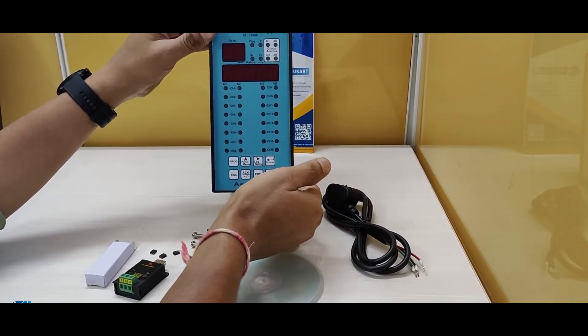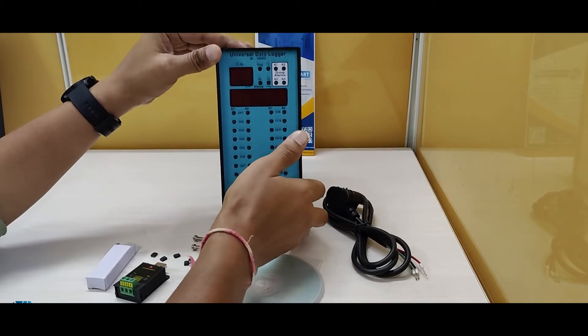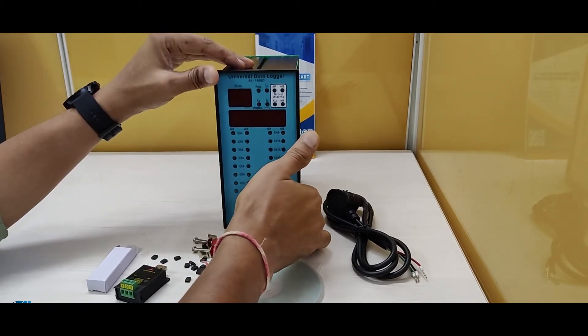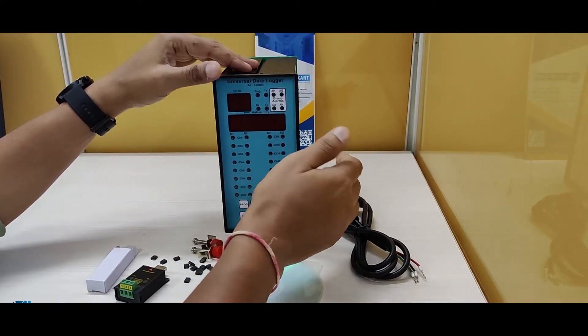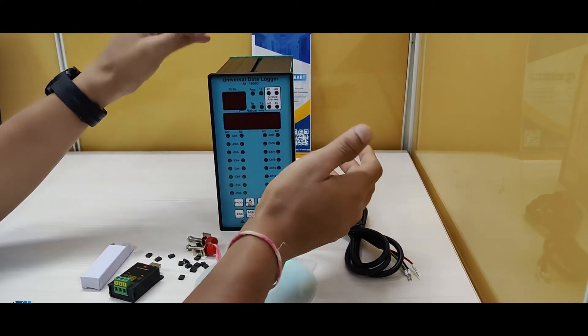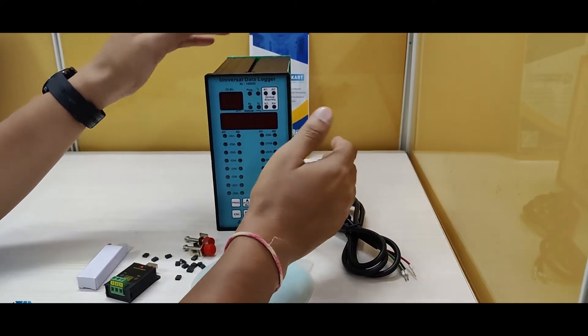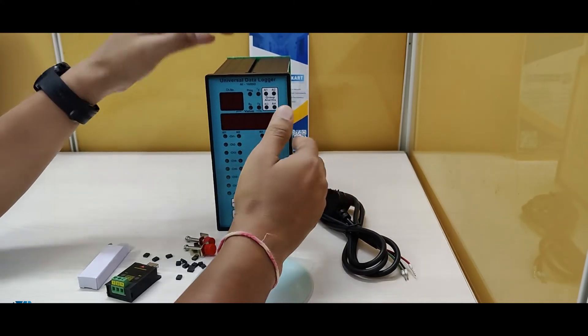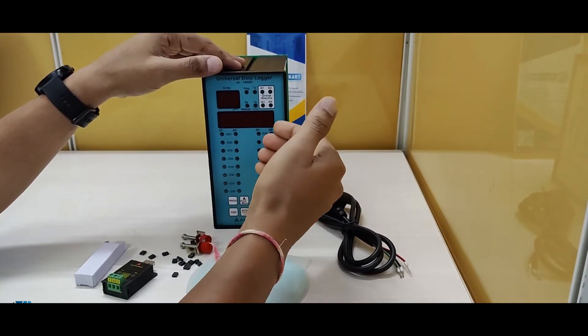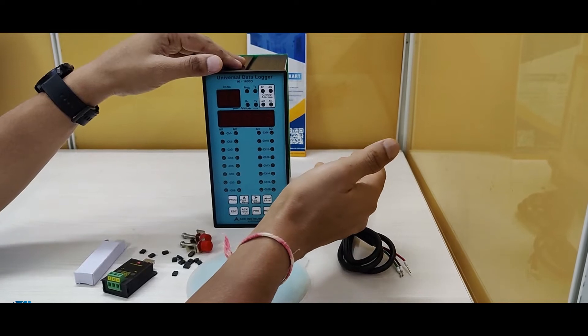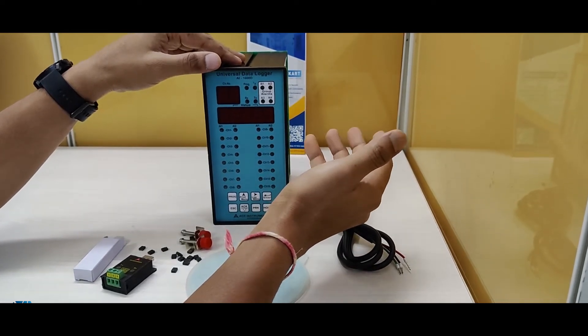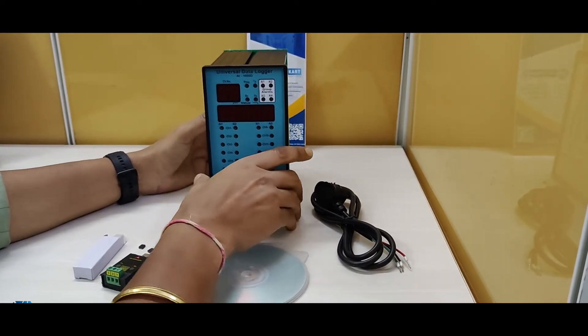This 16 channel universal data logger can take any input starting from RTD to thermocouple, to 4 to 20 inputs, and this can be any of the sensors whether it is light, sound, an RTD temperature sensor, or a differential pressure monitor, or any kind of inputs basically.